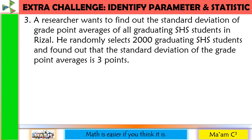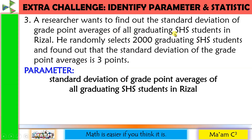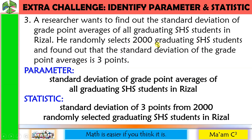Number three: a researcher wants to find out the standard deviation of grade point averages of all graduating senior high school students in Rizal. He randomly selects 2,000 graduating senior high school students and found that the standard deviation of the grade point averages is 3 points. The parameter is the standard deviation of grade point averages of all graduating senior high school students in Rizal. The statistic is the standard deviation of 3 points from the sample of 2,000 graduating senior high school students in Rizal.